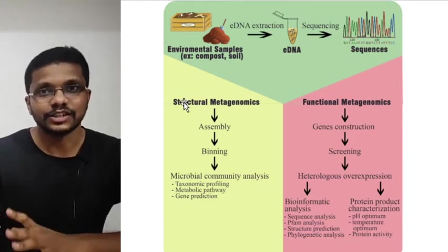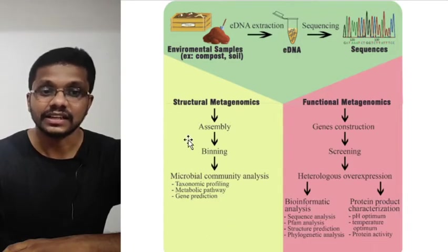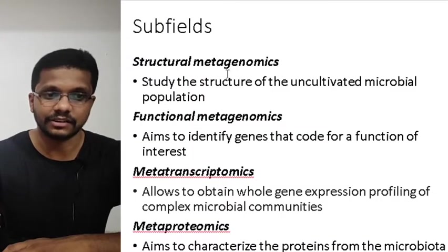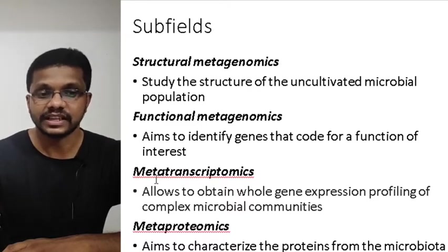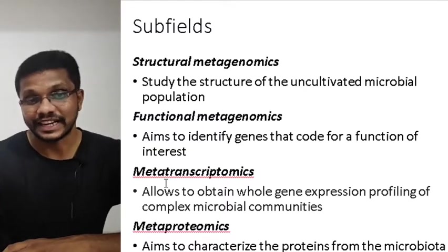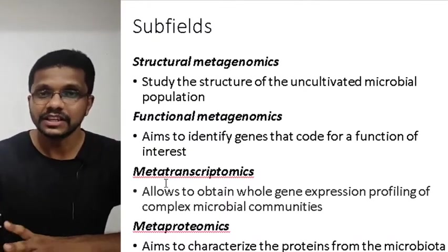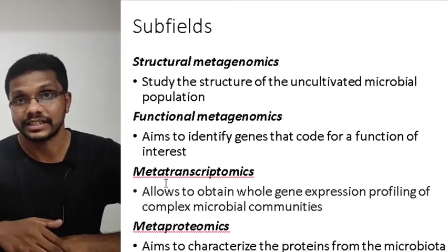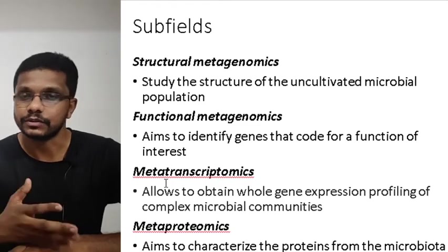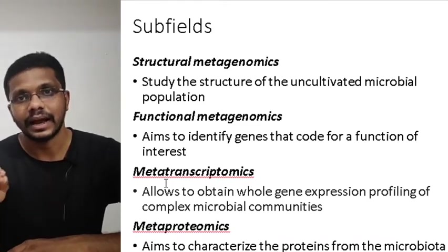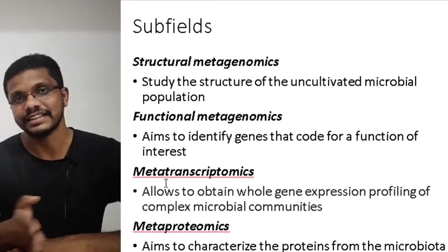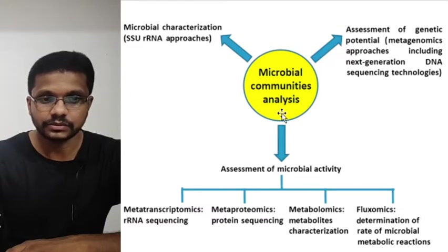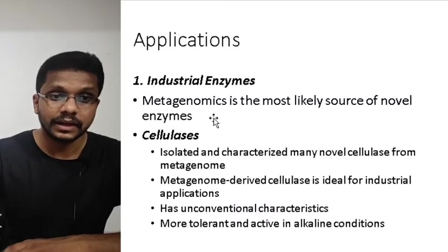Metagenomics can be divided into structural metagenomics and functional metagenomics, just like structural and functional genomics. In structural metagenomics, we study the genomic structure of the organism. In functional metagenomics, we study the possible functions of the genes. We also have meta-transcriptomics — the study of transcriptomes based on metagenomics — and metaproteomics, which studies the proteomics from the metagenomic data. The key point is that these organisms are not culturable, so we only work with DNA from environmental samples.